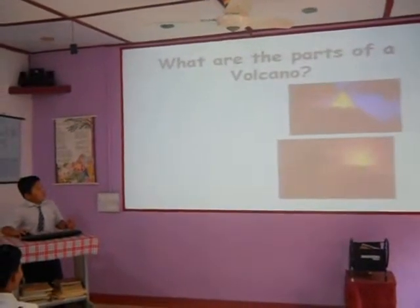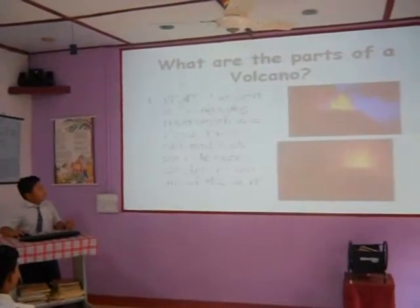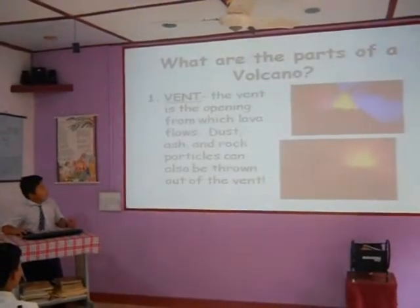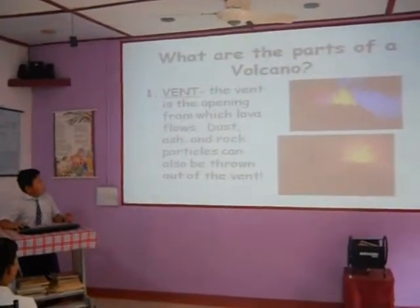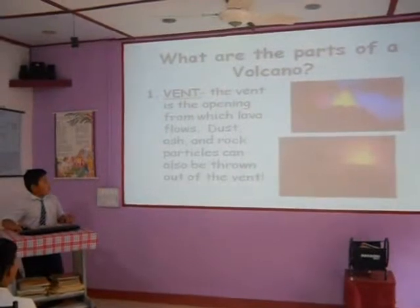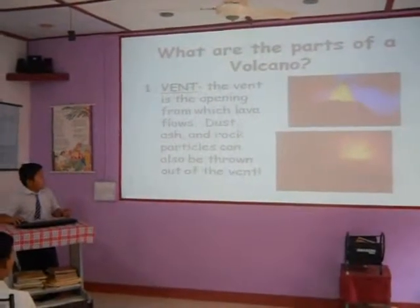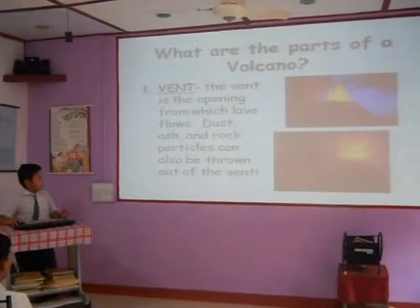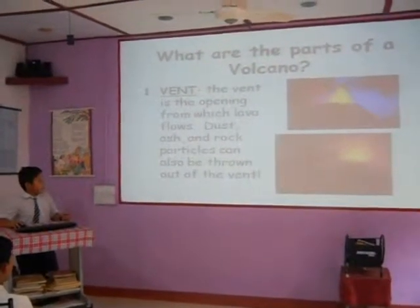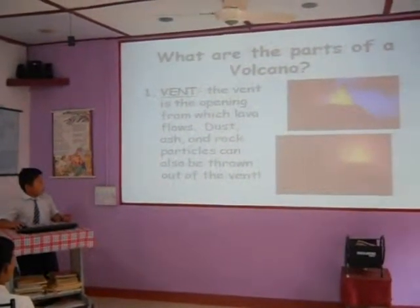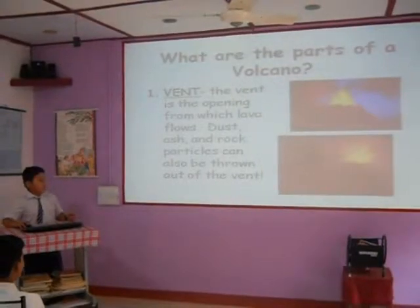Now, what are the parts of the volcano? Ranch. The ranch is the opening of the vent, where lava, dust, ash, and rock particles can also be thrown out of the ranch.